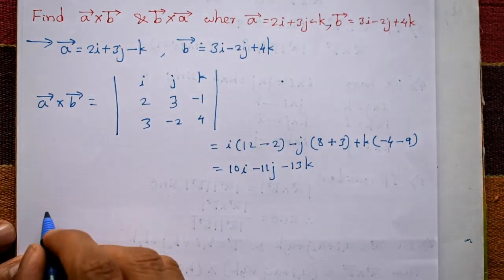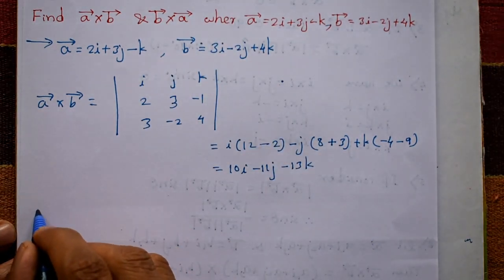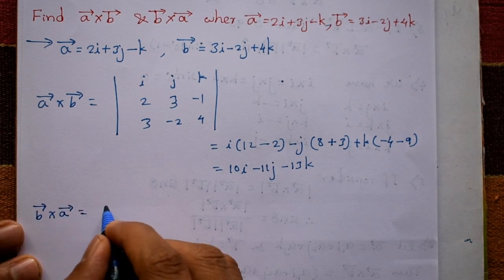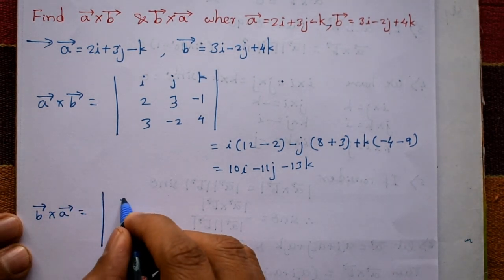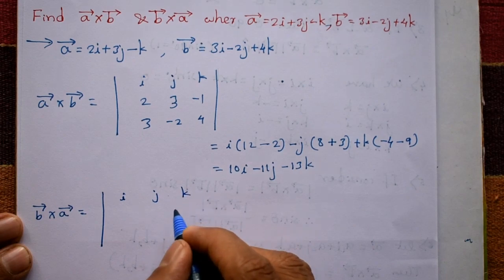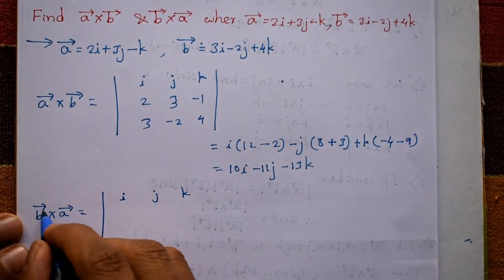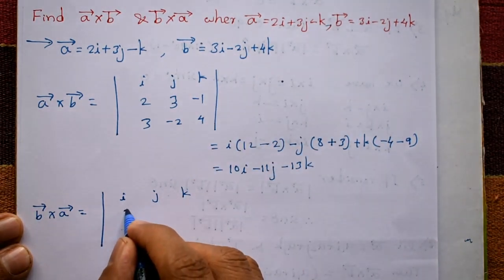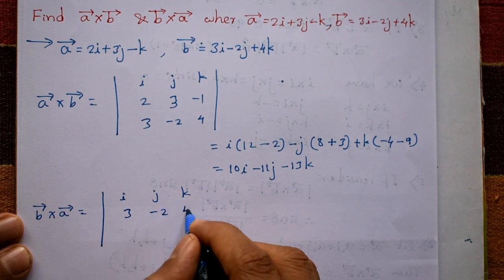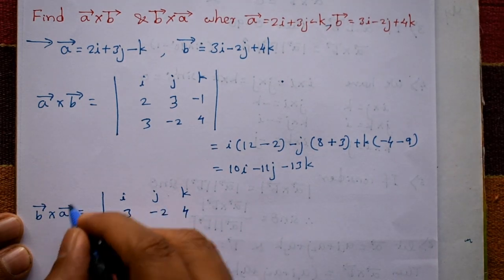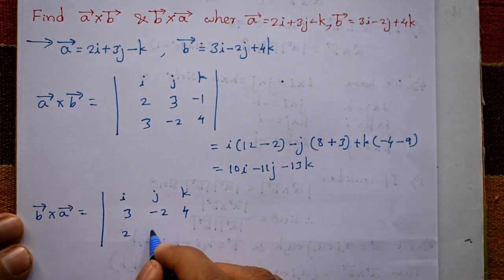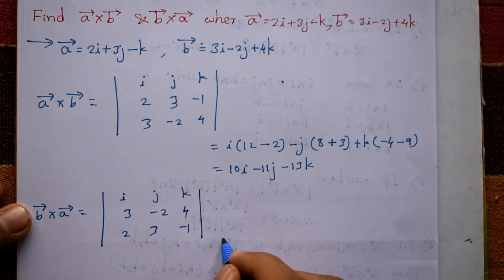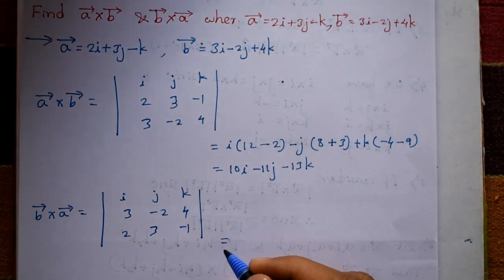Next we find vector b cross vector a. Again taking the determinant form with i, j, k in the first row, vector b components 3, minus 2, 4 in the second row, and vector a components 2, 3, minus 1 in the third row.